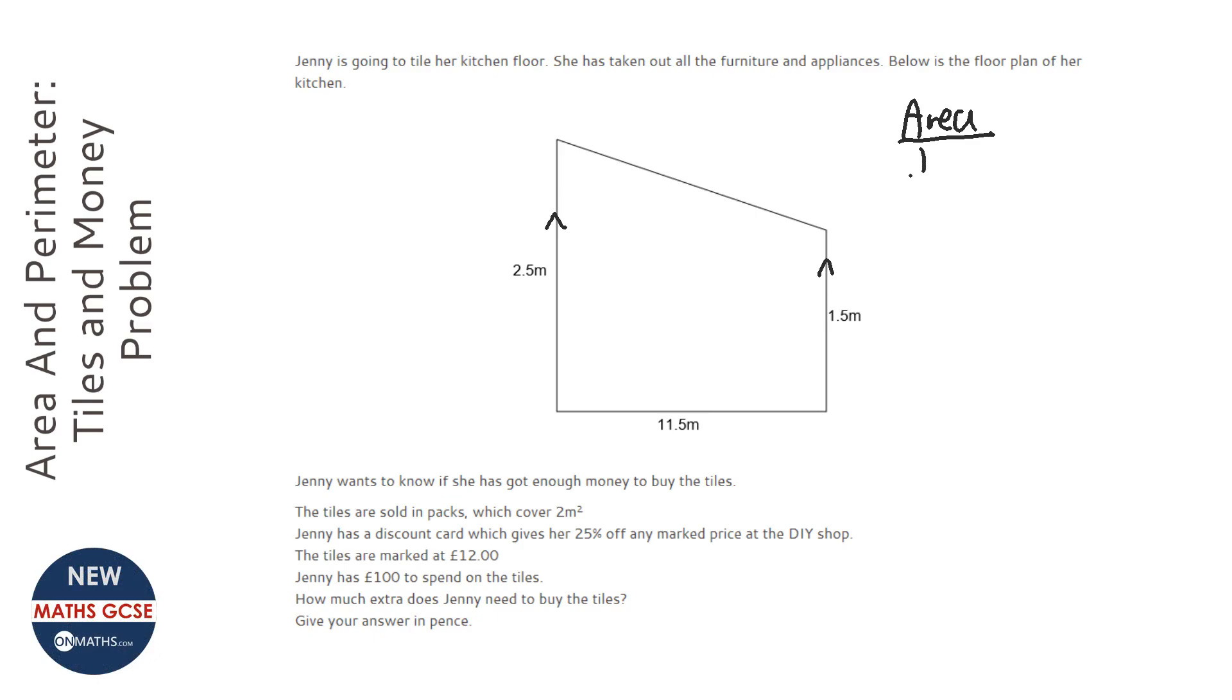So to work out the area, the formula is half a plus b h. Now, you need to work out what h and a and b are. a and b are always the ones on the parallel sides, so it's those two. It doesn't matter which way round you call them.